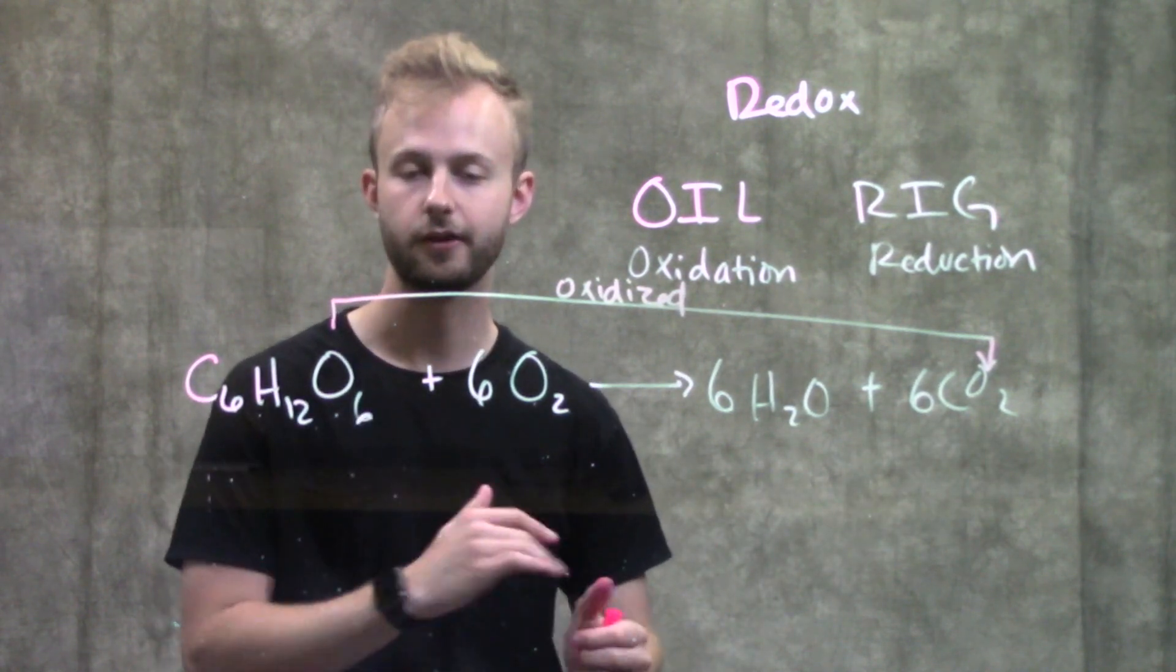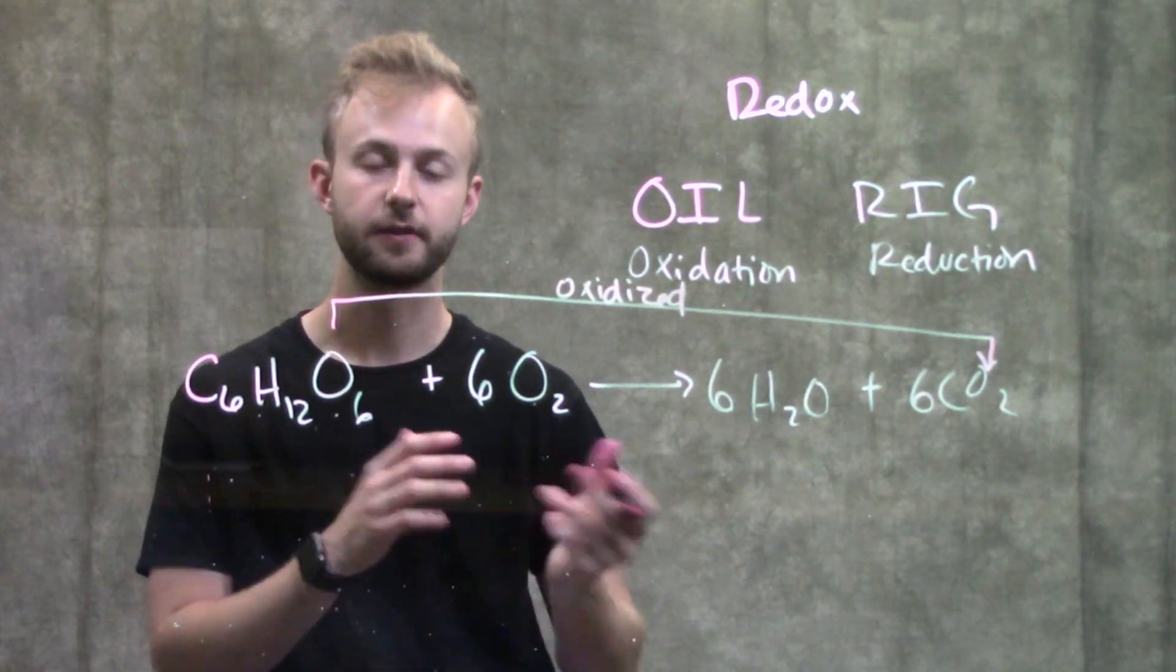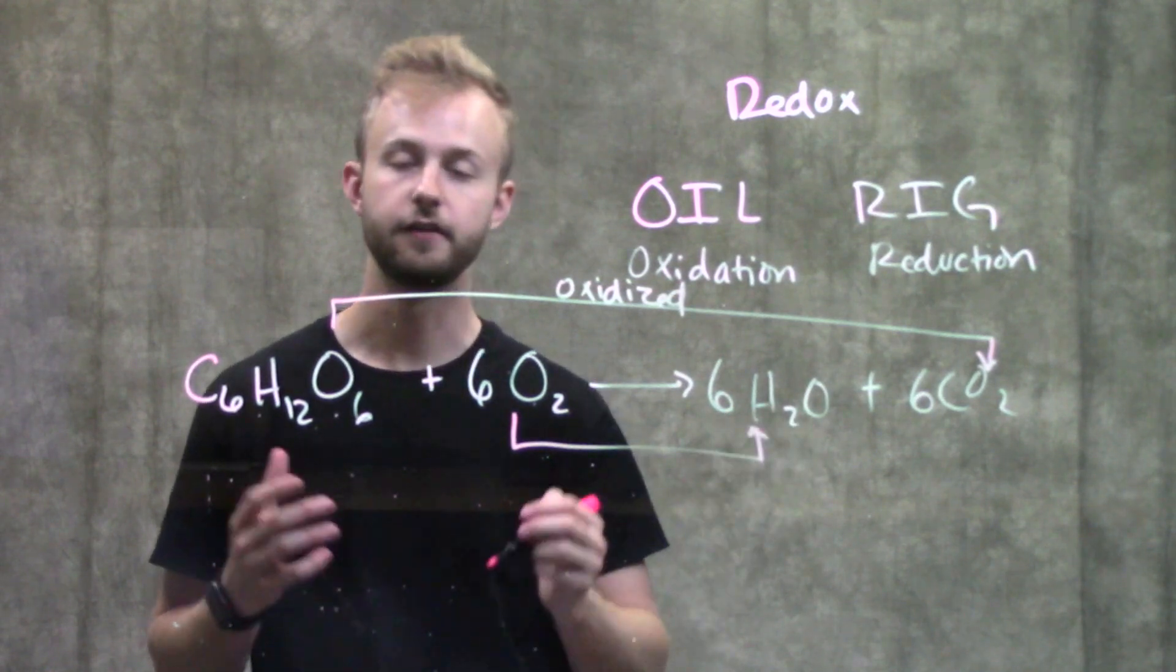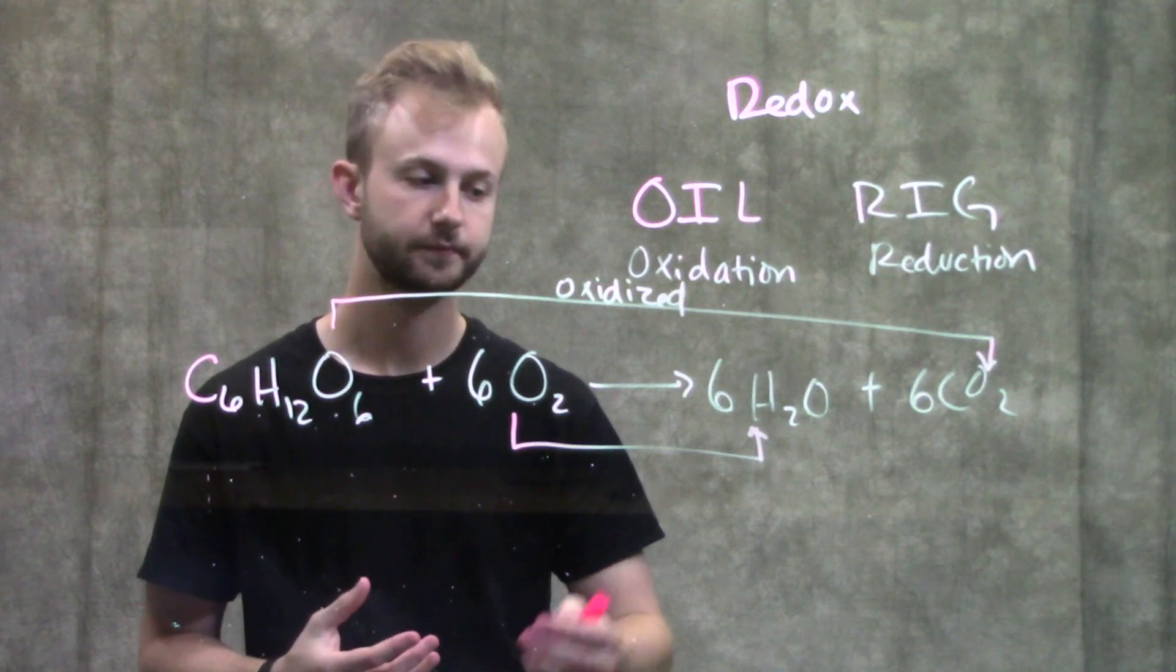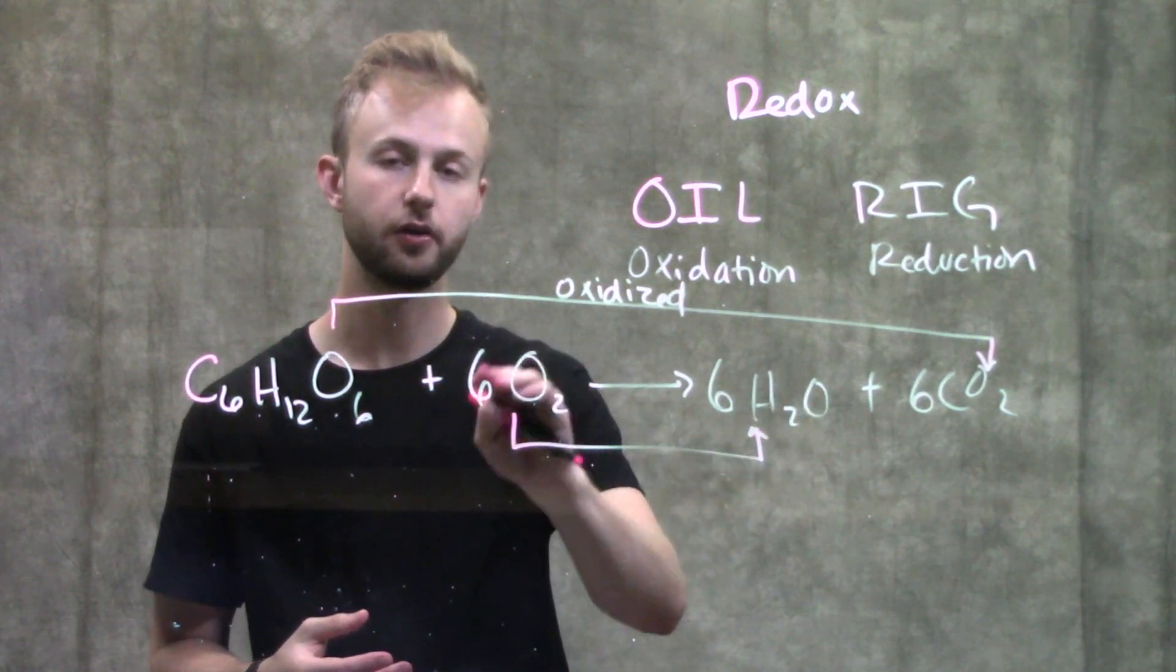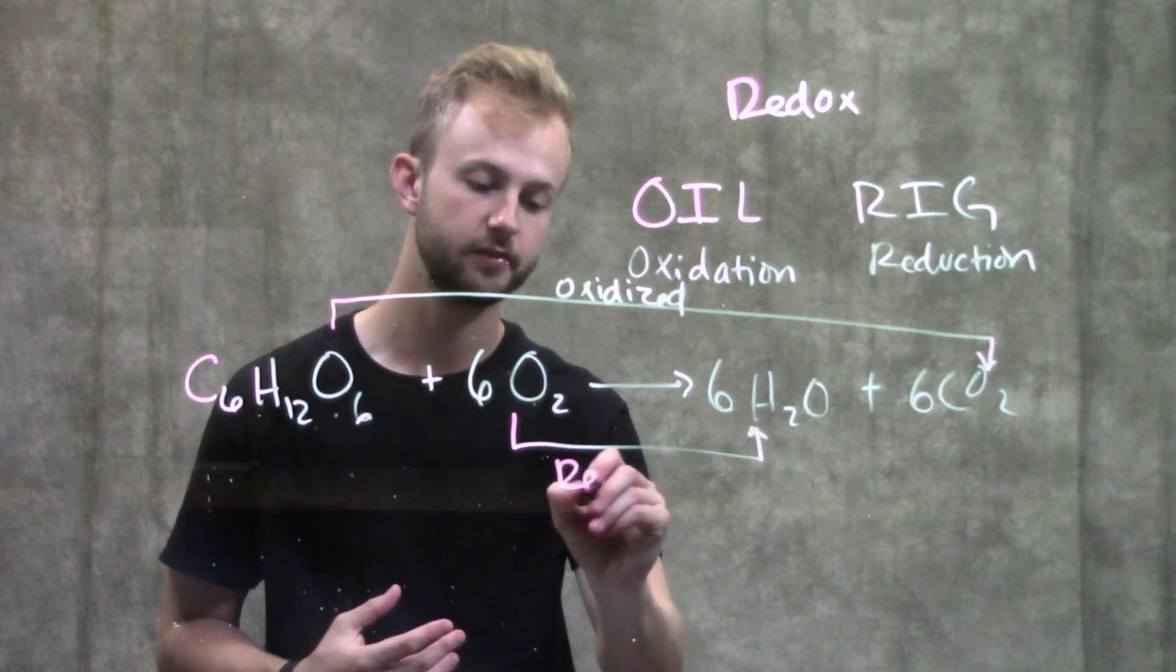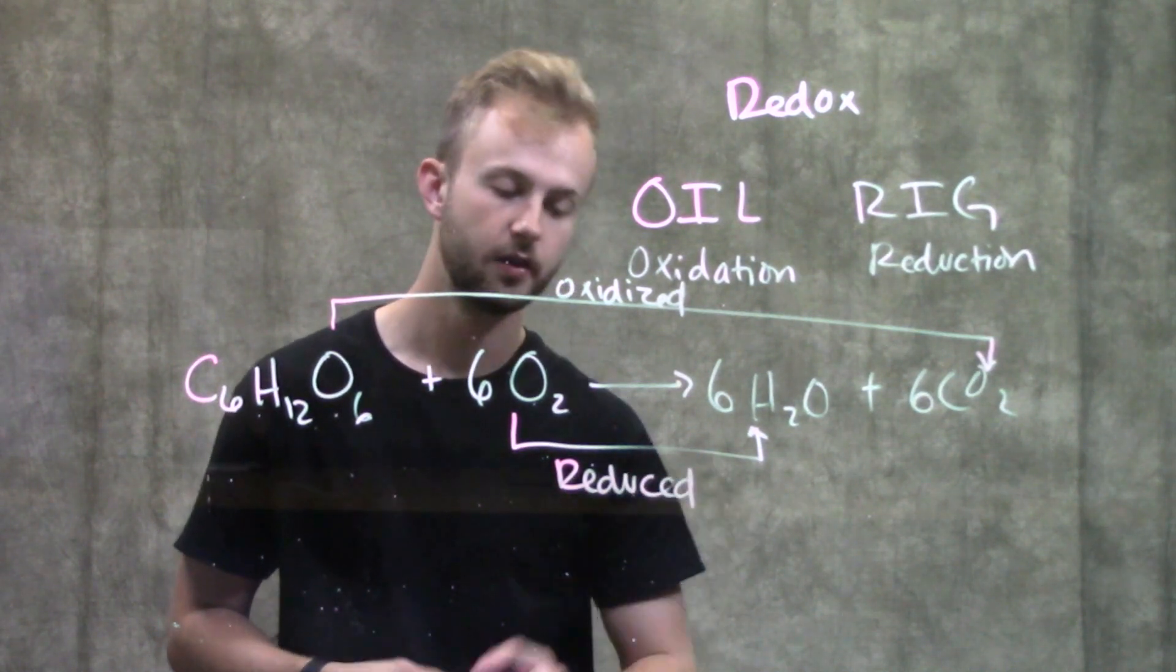In that process, it lost electrons. When we're losing electrons, something else has to be gaining them. You can tell if something's getting reduced if you increase the number of bonds that molecule has to hydrogen, which is what happens here. Here there's no hydrogen with the oxygen, but here we do have hydrogen with the oxygen. So this is reduction.